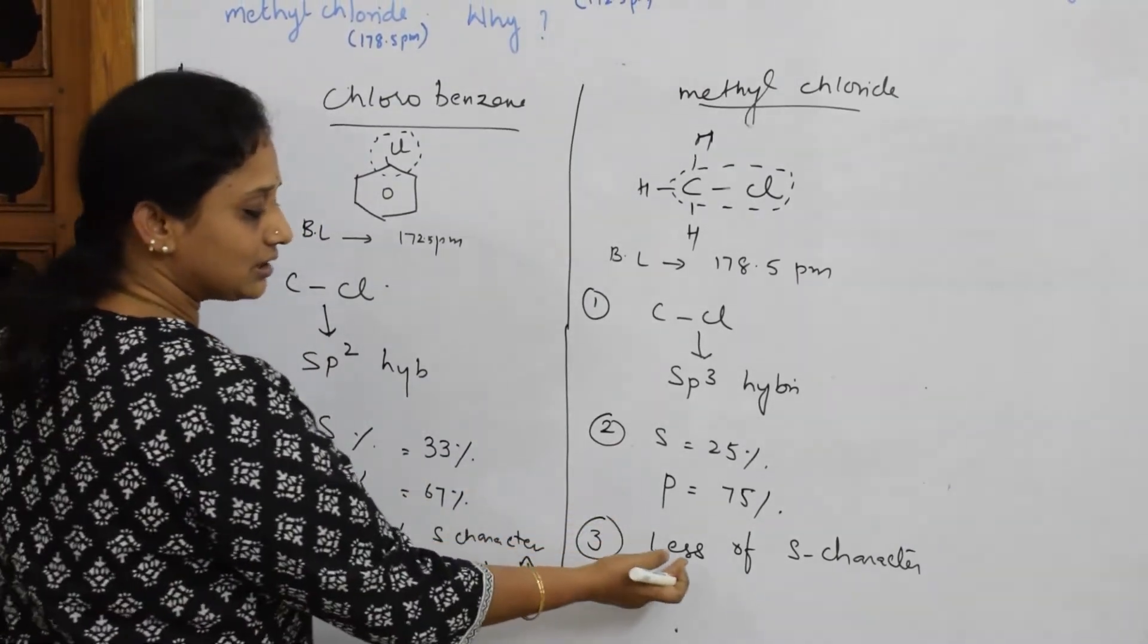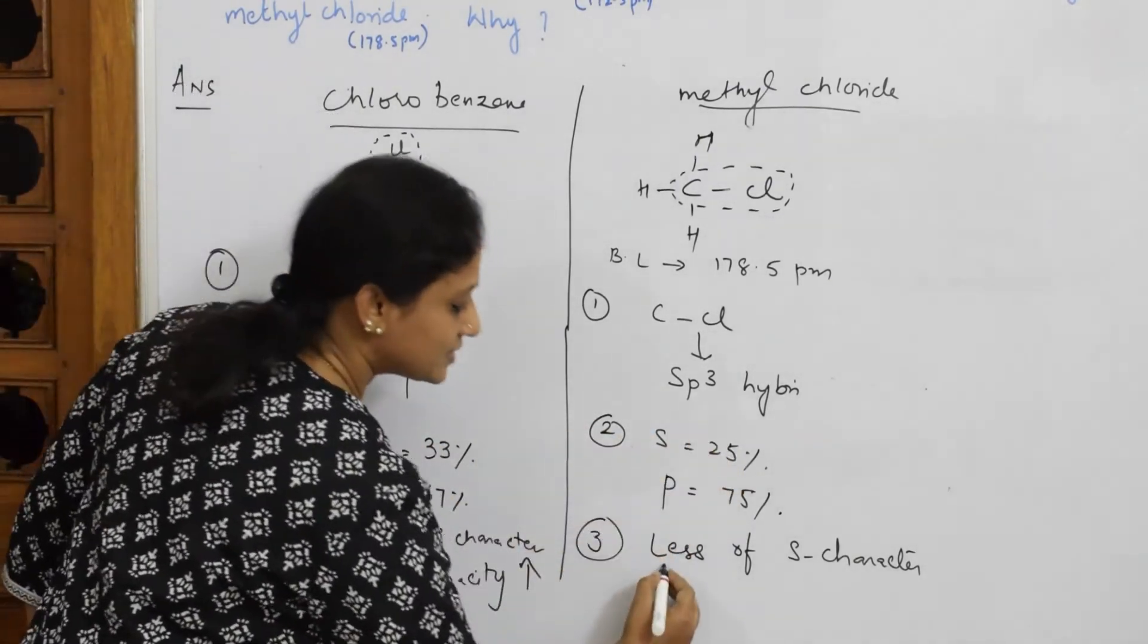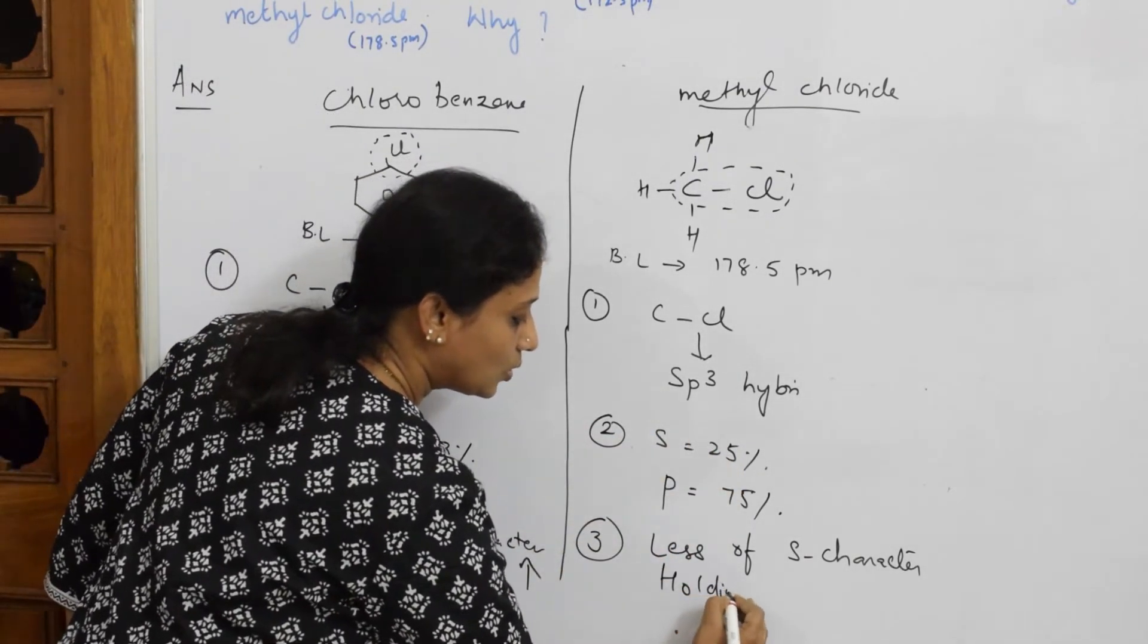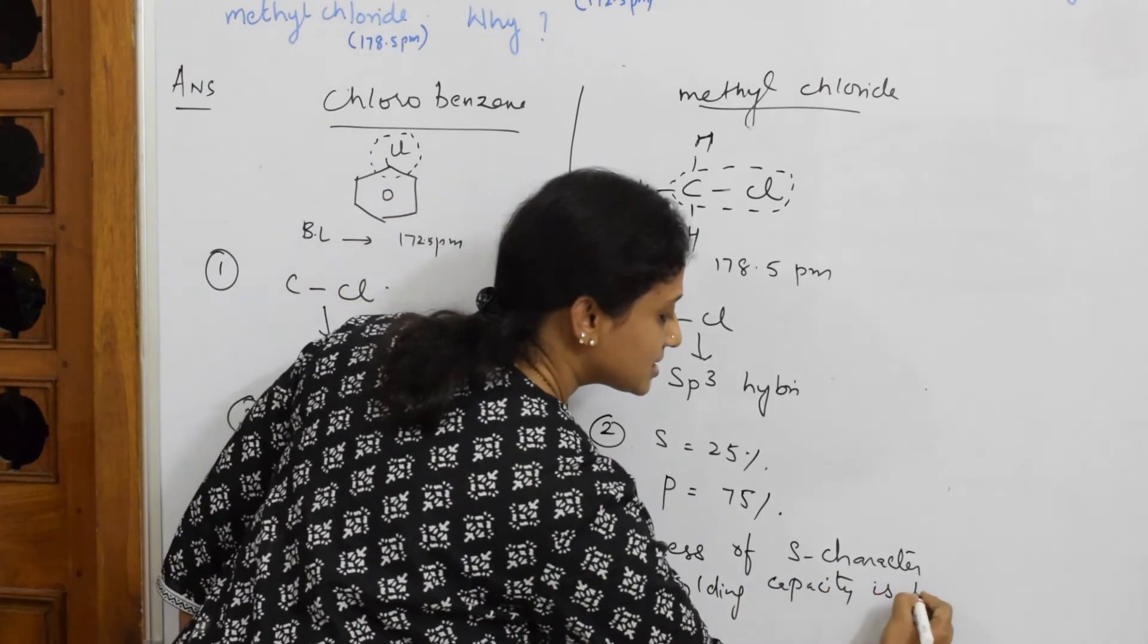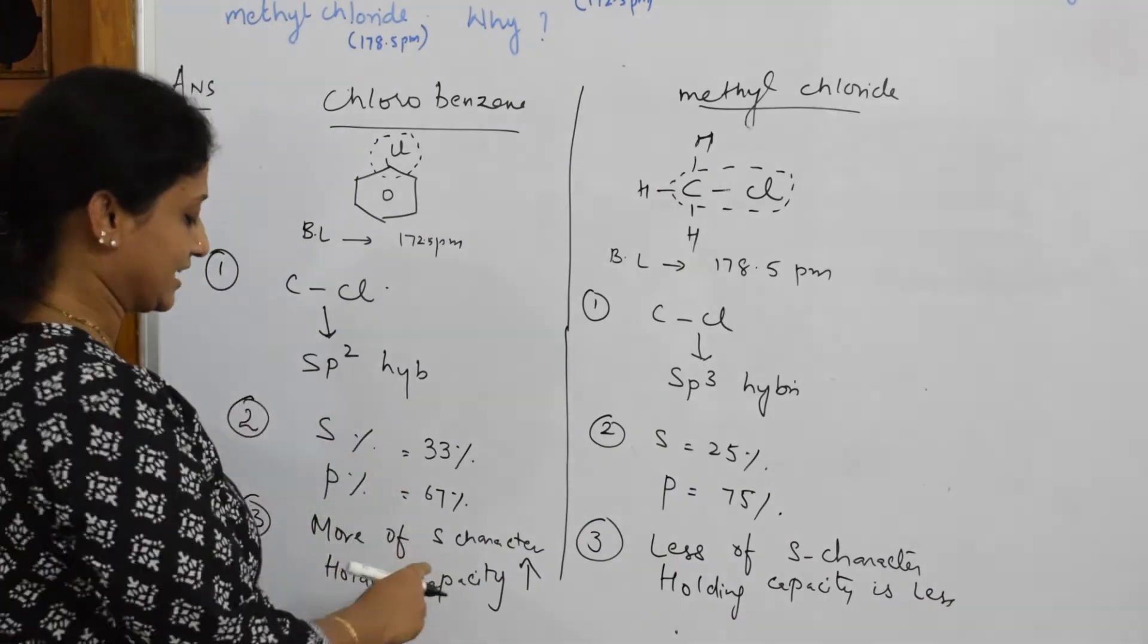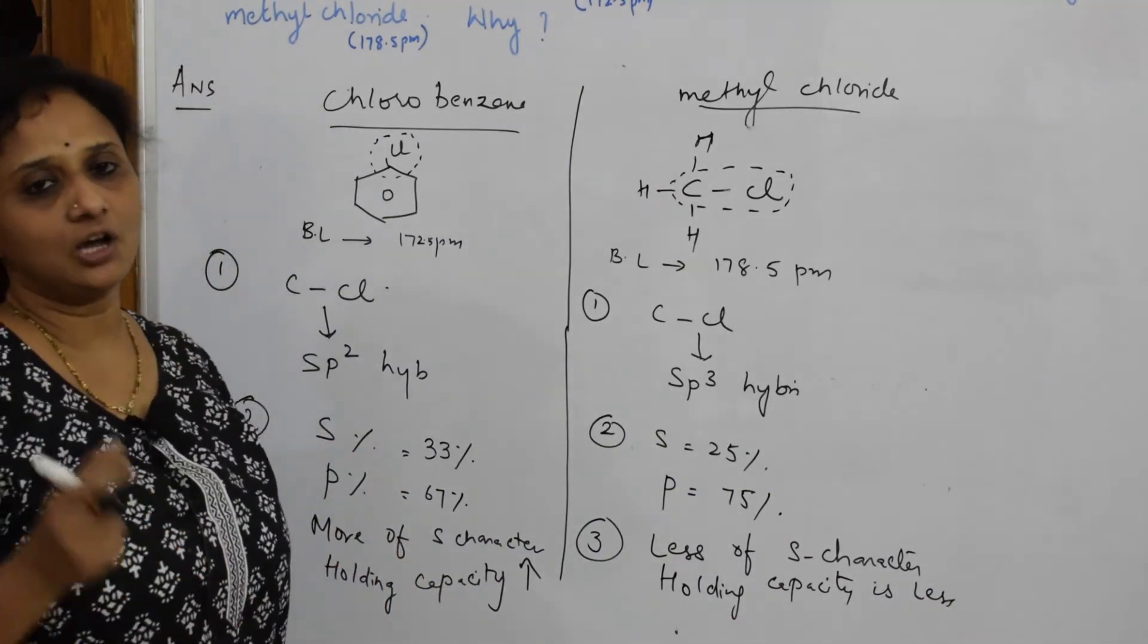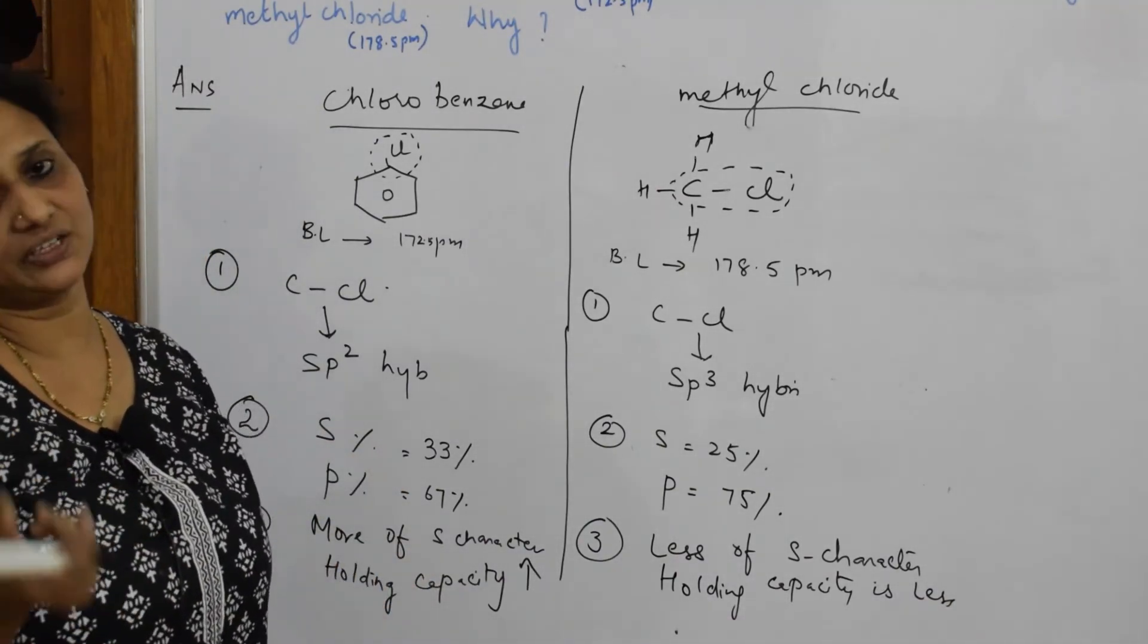So here, less of s character, I'm comparing this. Less of s character, so holding capacity is less. So what's happening? When it is holding tightly towards the nucleus, automatically your bond length decreases.